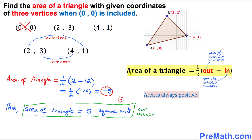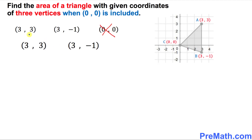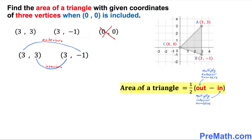Thus the area of this given triangle turns out to be positive five square units — that is our answer. Moving on to the next example: similarly, one of our vertices is at the origin zero zero, so once again, just ignore the zero zero, we no longer need it. That means we end up with just these two points. Our exterior points are three and negative one, and our interior points are three and three.